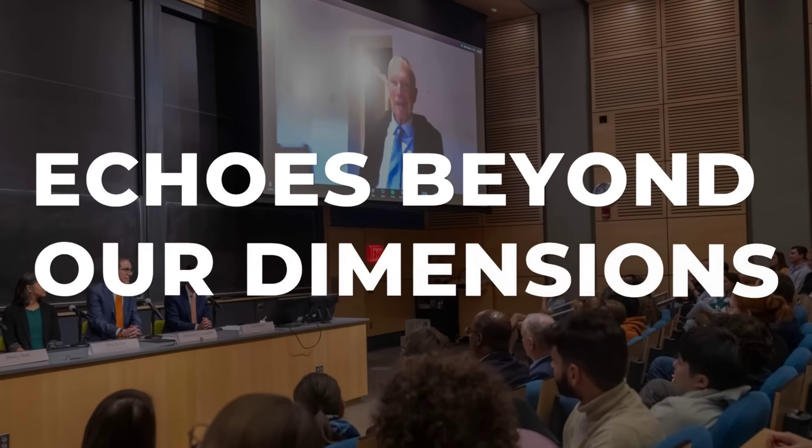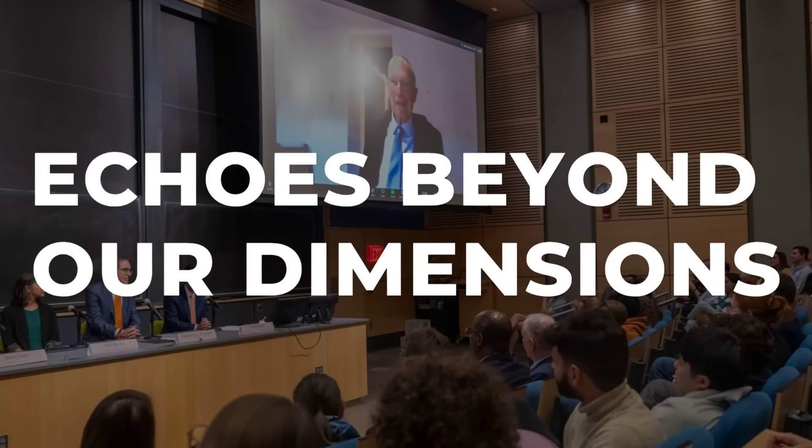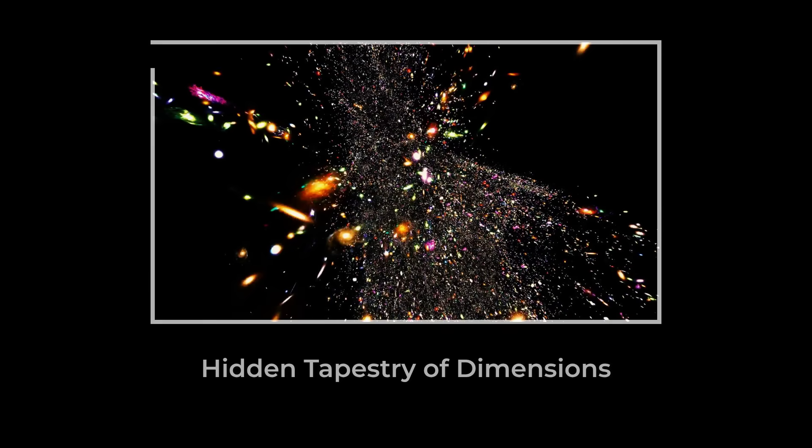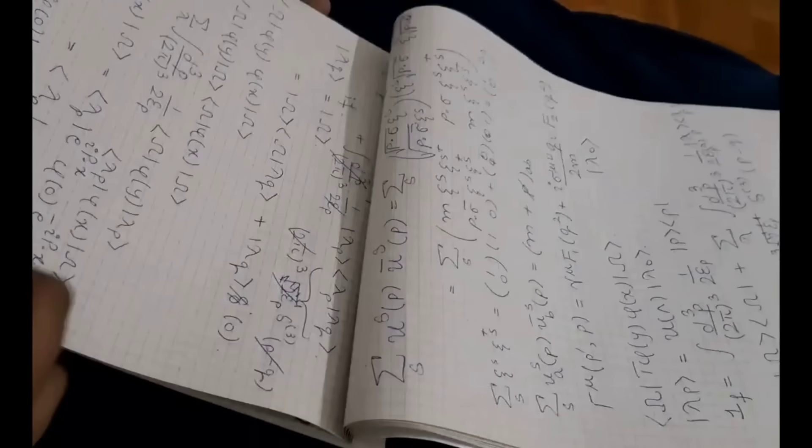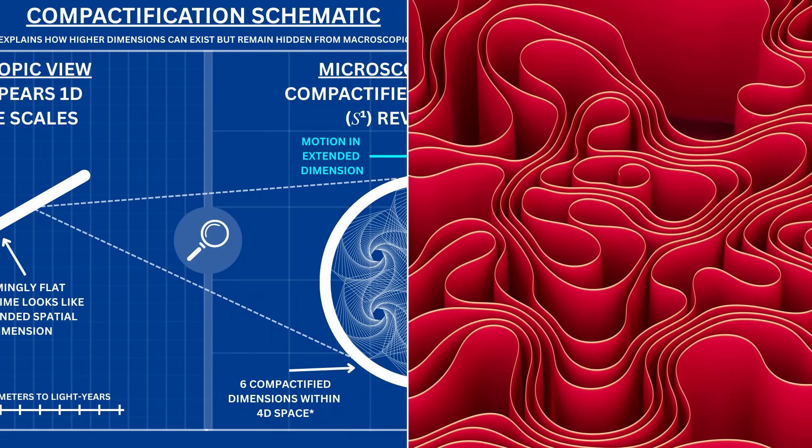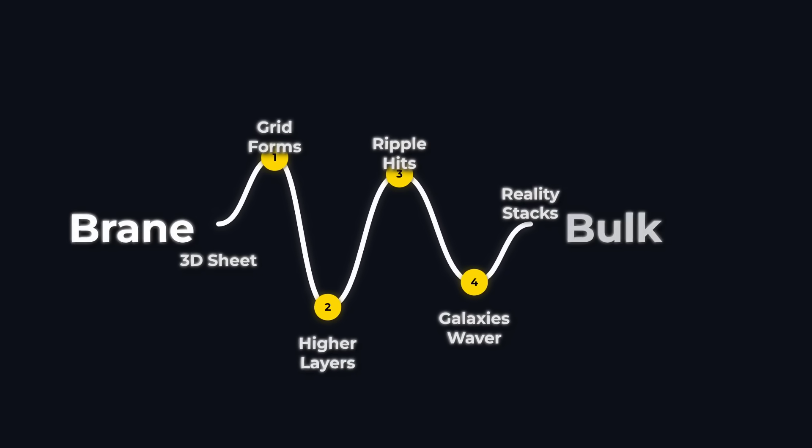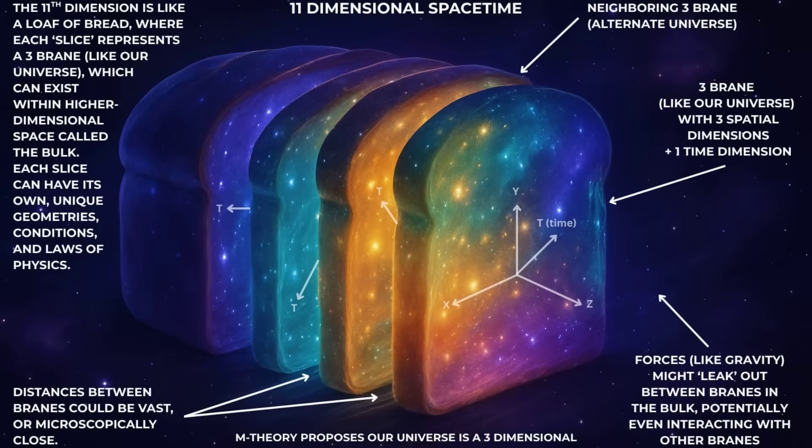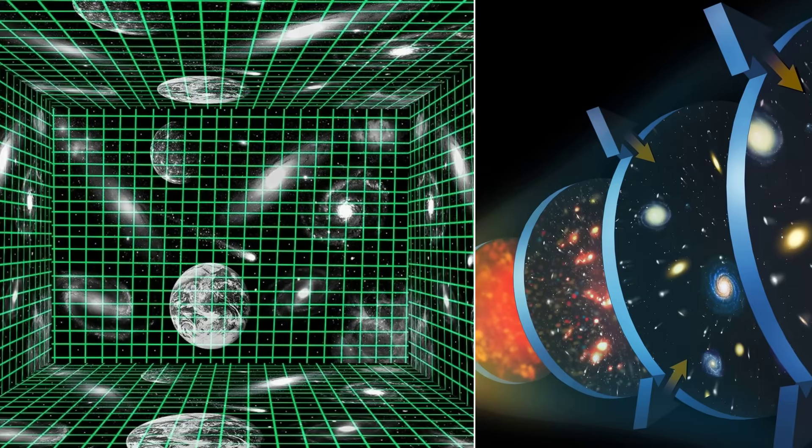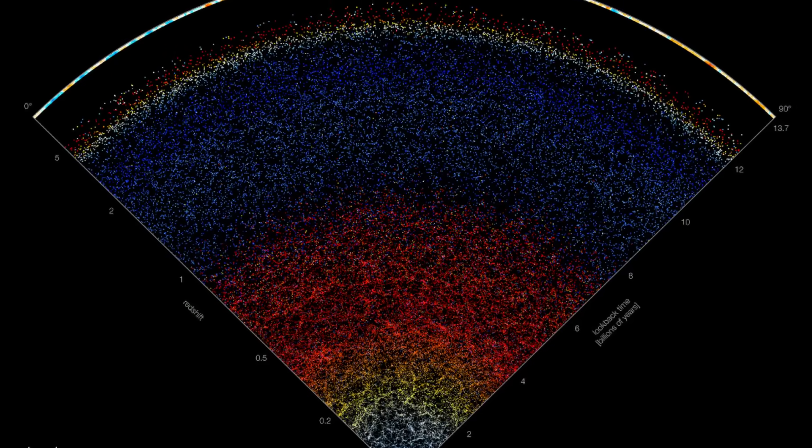String theory doesn't just add new particles to the cosmic roster. It proposes that everything we know is woven from vibrating strings, each one a note in a symphony that plays across more than three dimensions. The mathematics behind string theory demands extra spatial dimensions, curled up so tightly that they escape direct detection. Some theorists describe our universe as a three-dimensional membrane, or brane, floating in a higher-dimensional space. In this picture, what we call reality is just a slice of a much larger structure.